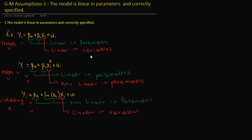Is linearity in parameters clear now? Let's talk about correctly specified. What does correctly specified mean? Here's an example: weight is a function of age, where beta0 and beta1 are the parameters.